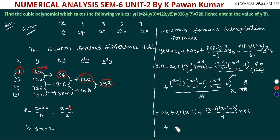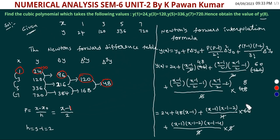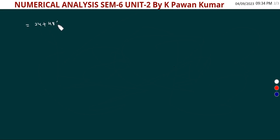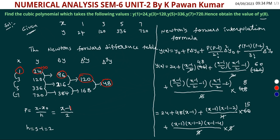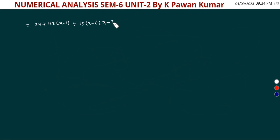Simplifying: 24 + 48(x−1) + 15(x−1)(x−3) + (x−1)(x−3)(x−5). Expanding each term and collecting like terms gives us the cubic polynomial.